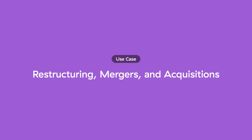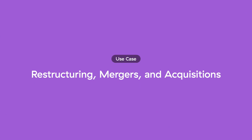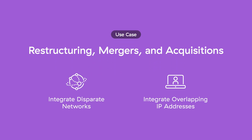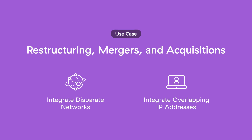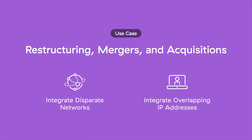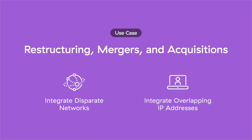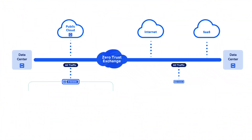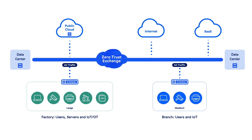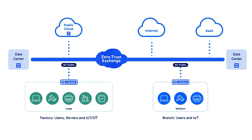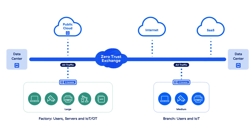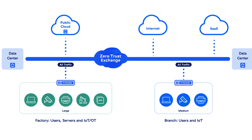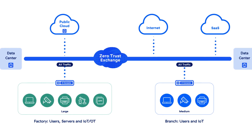The second use case: organizations dealing with restructuring, mergers, and acquisitions are often challenged with how to integrate disparate networks and translate overlapping IP addresses to ensure users have access to critical services like Active Directory. Zero Trust SD-WAN eliminates all the complexity. You can simply create business policies allowing your users and devices to talk to the necessary applications through the Zero Trust Exchange platform — no more worrying about merging networks, overlapping IPs, and address translations.